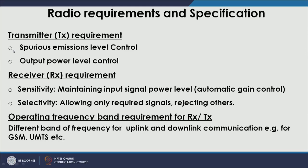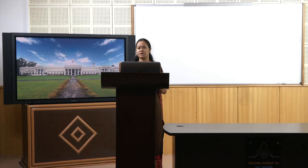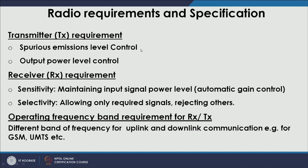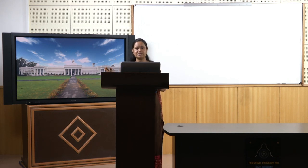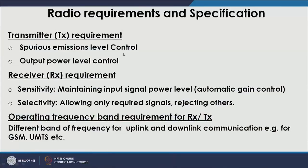For the transmitter, you require spurious emission level control. This means you have to keep the distorted signal's extra components away from the main area and prevent them from coming into neighboring areas in the frequency domain. There are regulatory bodies which keep a tab on this. The transmitter also has to control the power level because the signal has to travel a distance, so it should be able to provide sufficient power.